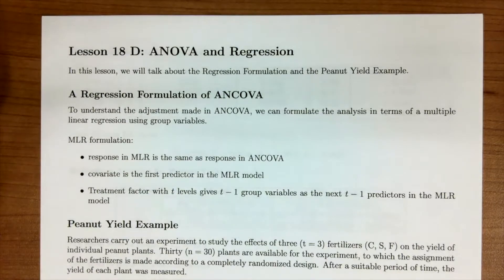We're going to start with talking about the regression formulation in terms of the peanut yield example. Before I do that, remember in Lesson 13 we started talking about dummy variables or grouping variables, and that idea is going to come back into play. To understand the adjustments made in ANCOVA, we can formulate the analysis in terms of multiple linear regression using those dummy variables or group variables that we talked about in Lesson 13.